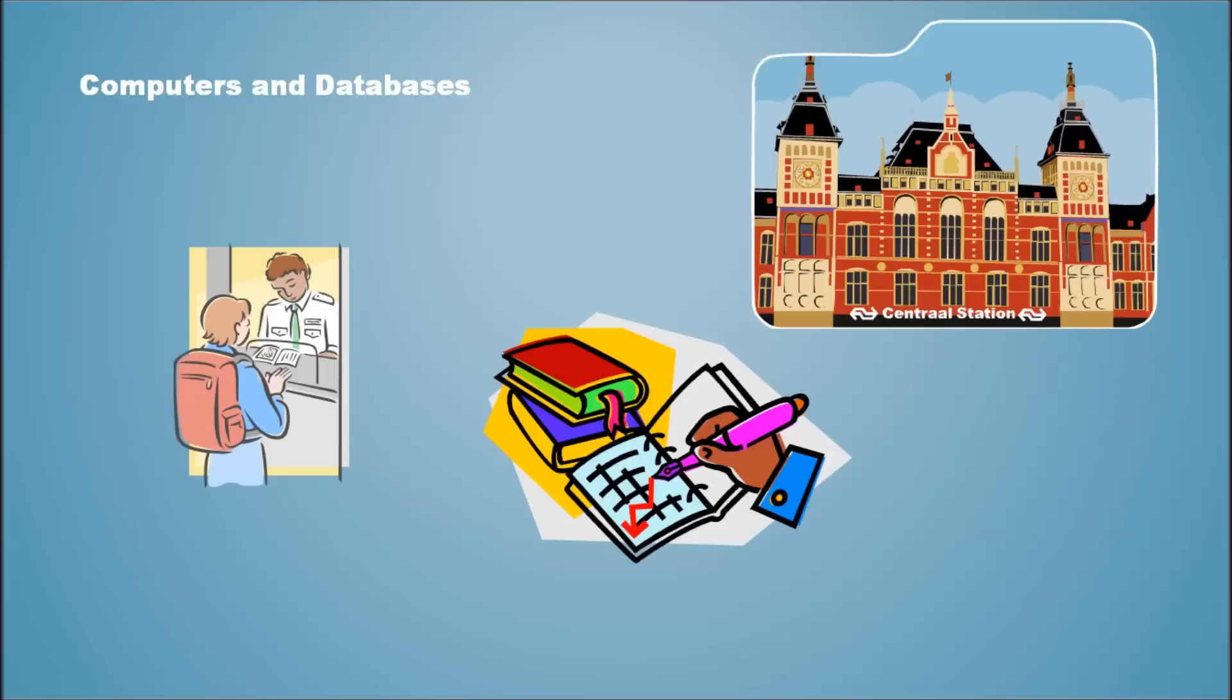Probably the first train station would have started with one ticketing booth or ticketing counter. And the ticketing officer would have used a ledger book like this to note down the particulars of tickets being sold. Right there, that is a database. Handwritten but still it's a database.